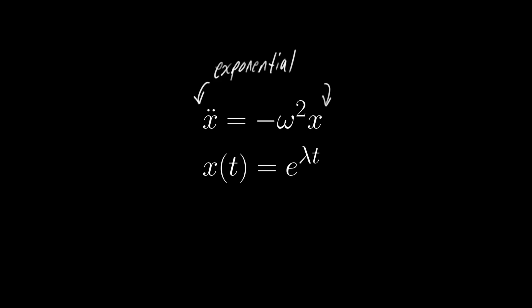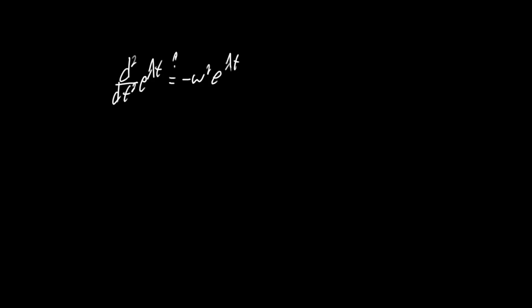So by plugging our ansatz into the equation, we see that indeed the exponentials cancel out, and we derive this auxiliary equation. Because there is a lambda that satisfies this auxiliary equation, it confirms our initial guess, and what we get is that x is equal to a complex exponential.